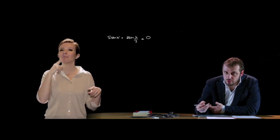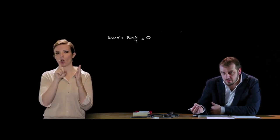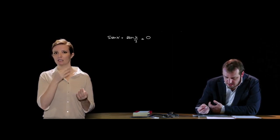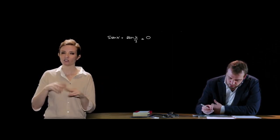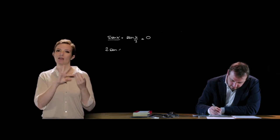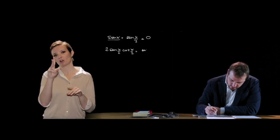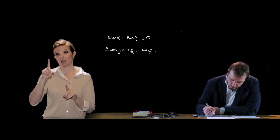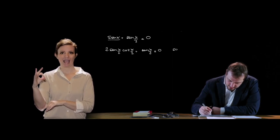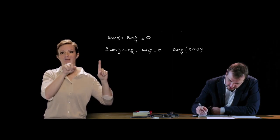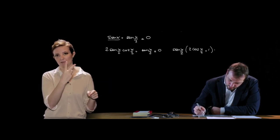La difficoltà è che l'angolo x è presente sia come x che come x/2. Applichiamo le formule di duplicazione: sen x = 2 sen(x/2) cos(x/2), quindi otteniamo 2 sen(x/2) cos(x/2) + sen(x/2) = 0. Raccogliendo sen(x/2): sen(x/2) · (2 cos(x/2) + 1) = 0.